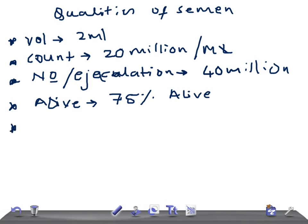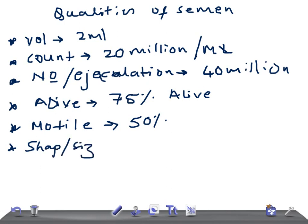The next important point is motility, which is really very important for USMLE and other medical board examinations. A minimum of 50% of sperms must be motile. Additionally, the shape and size of the sperm structure is assessed — at least 30% of sperms should have a normal shape, size, and structure.